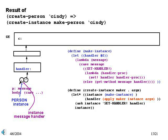First, createInstance calls makeInstance. This drops a frame corresponding to the makeInstance call with nothing in it, and then drops another frame for the let statement. Here, we have the handler variable bound for the moment to #f. We then evaluate the lambda in makeInstance, which creates what we call the instance message handler, whose only job is to respond to the setHandler message, which we'll use in just a moment, and thereafter to pass along all messages to the actual message handler for the person.